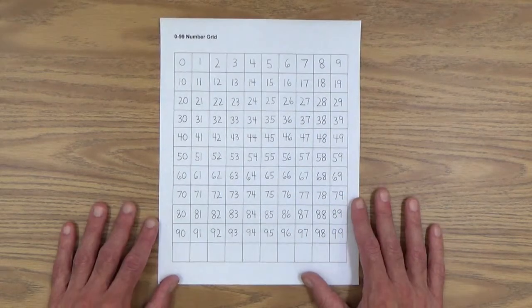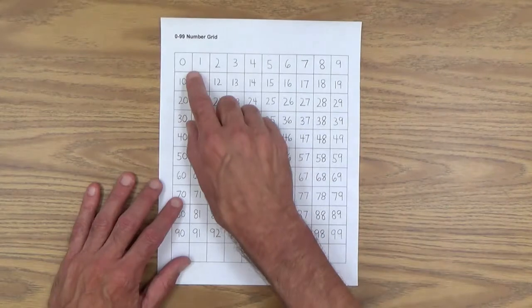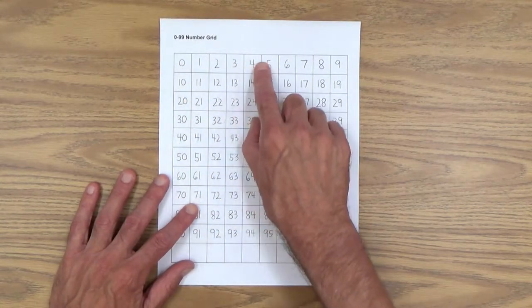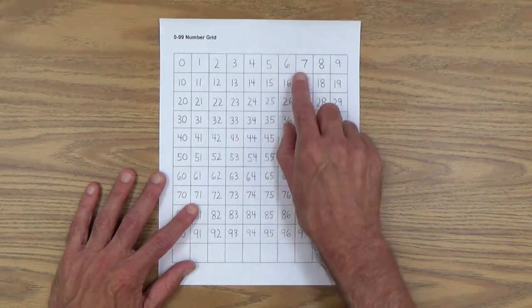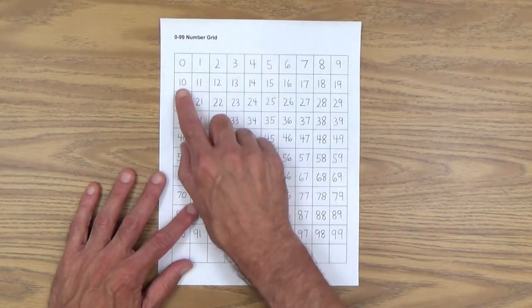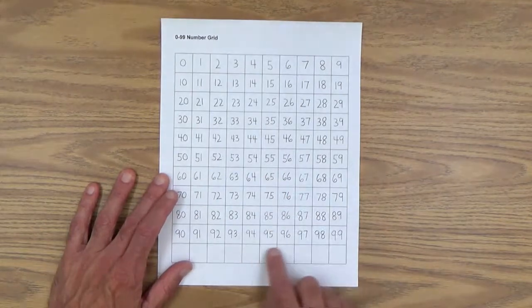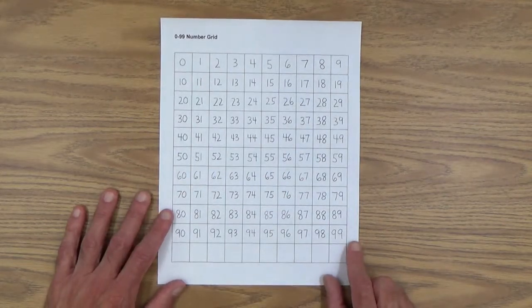Reading the grid, we've been through that already. It's just like reading a book. Start up here. 0, 1, 2, 3, 4, 5, 6, 7, 8, 9. And then we come back down here to 10 and on and on, all the way down to the bottom of the page.